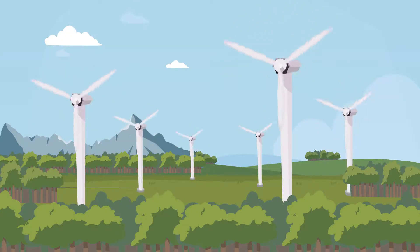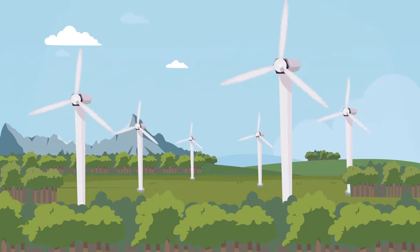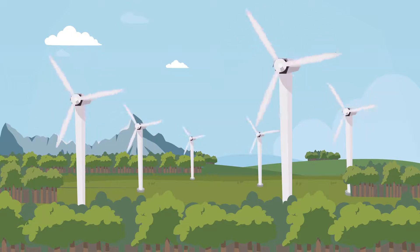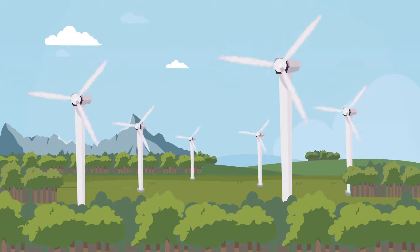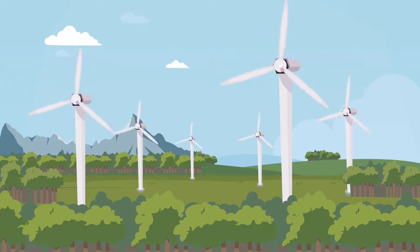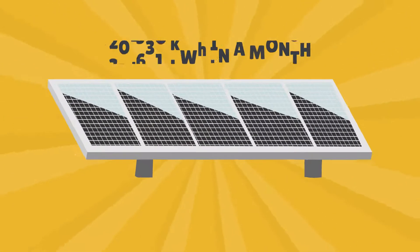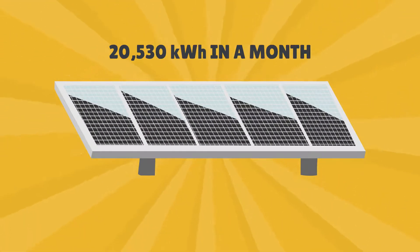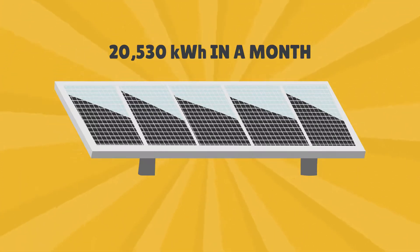Renewable energy sources such as wind and solar power can't always produce power at full nameplate capacity, since they rely on variable inputs like the wind and sun. If a 100 kW solar power system produces 20,530 kWh in a month, the capacity factor is calculated as follows.